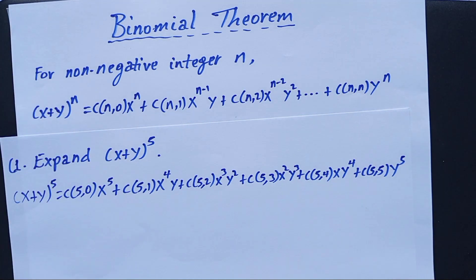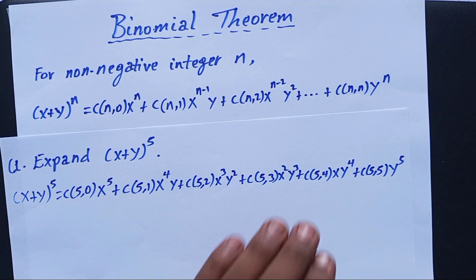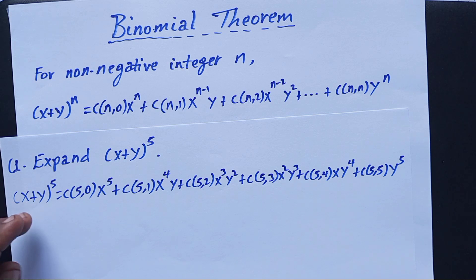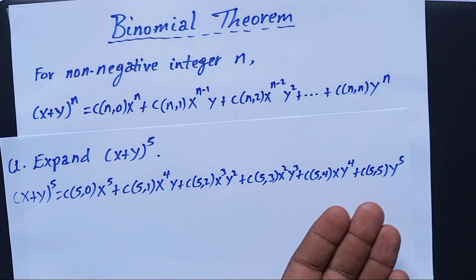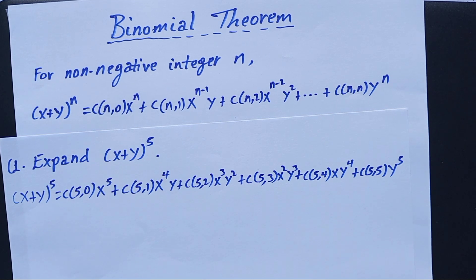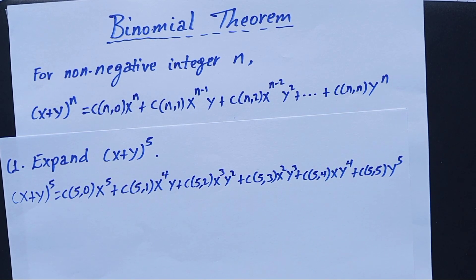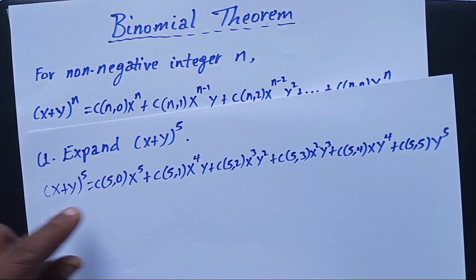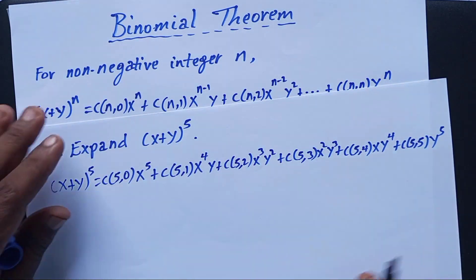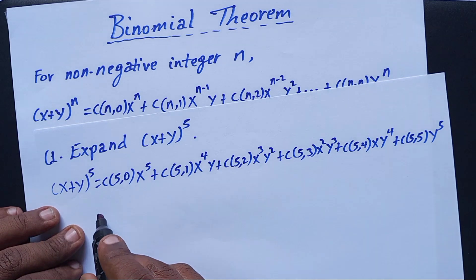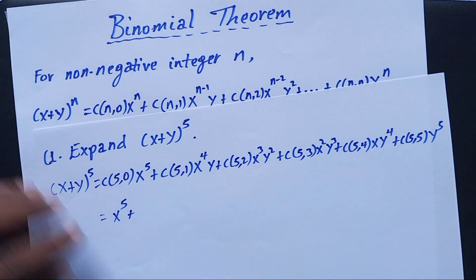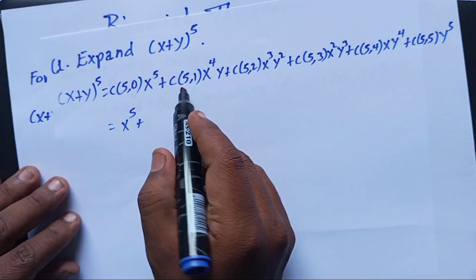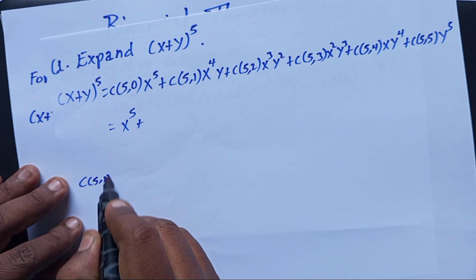So instead of multiplying x + y five times, we can use this theorem directly. Now let us find the combination values. C(5,0) and C(5,5) are both equal to 1, so we have x^5 as the first term. Let us calculate C(5,1).